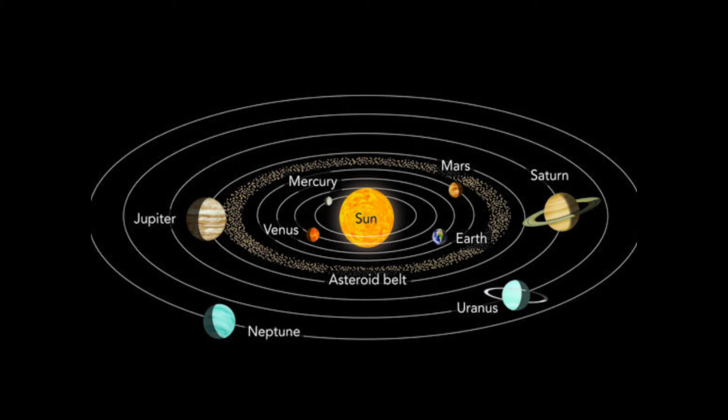Which are the seven planets? The seven planets are: Mercury, Venus, Mars, Jupiter, Saturn, Uranus and Neptune. See the figure of our solar system.